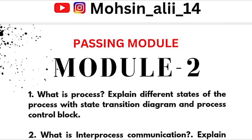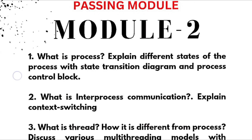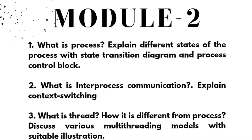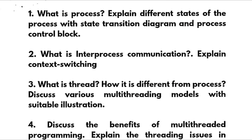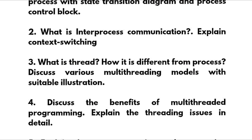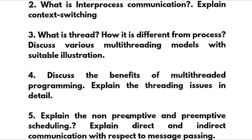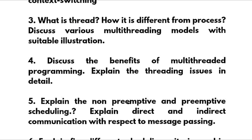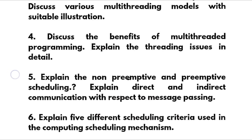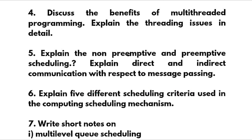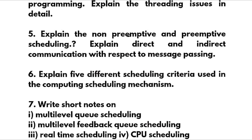Next we have another passing module — module 2. What is a process? Explain different states of the process with state transition diagram and process control block. What is inter-process communication (IPC)? Explain context switching. What is a thread and how is it different from a process? Discuss various multi-threading models with suitable illustration — this is again a super important question. Discuss the benefits of multi-threaded programming. Explain the threading issues in detail. Explain non-preemptive and preemptive scheduling. Explain direct and indirect communication with respect to message passing.